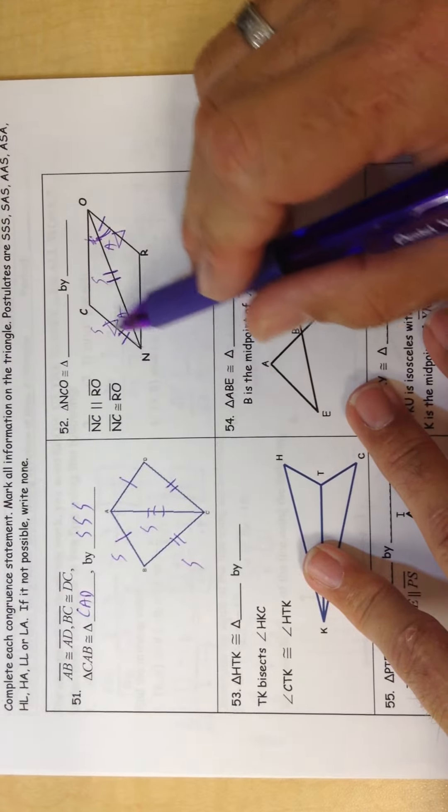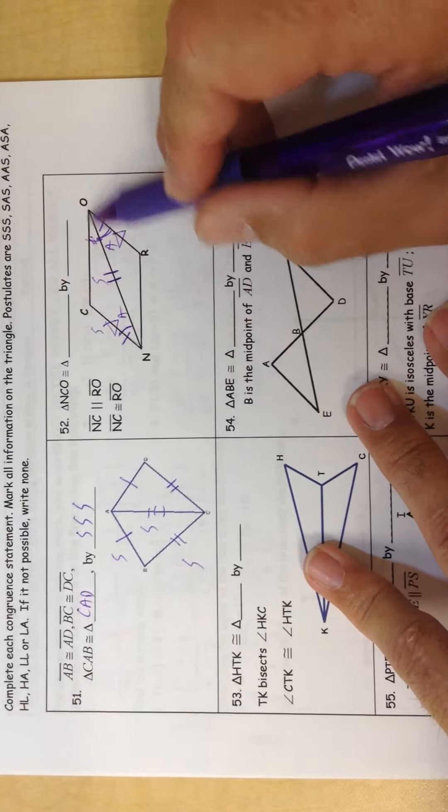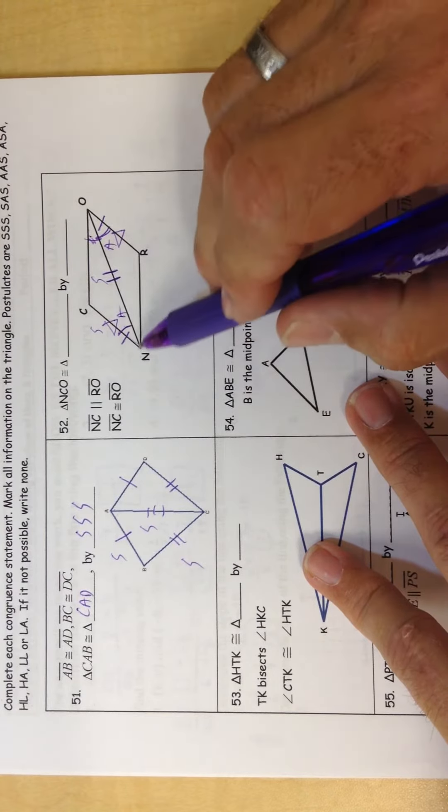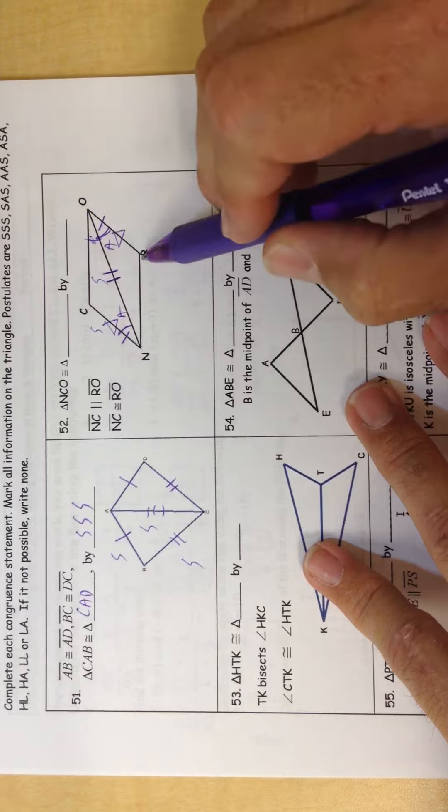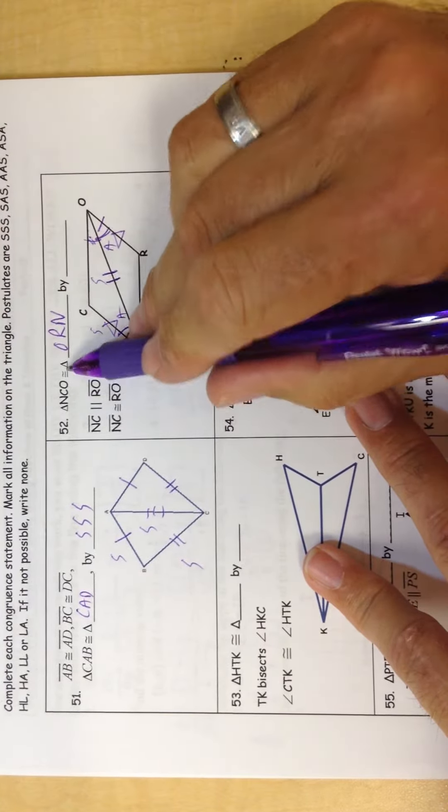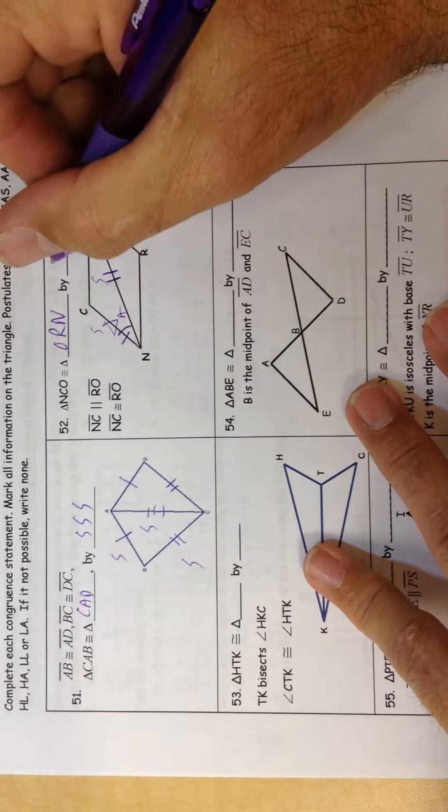So triangle NCO is going to be the same as triangle ORN. Remember, these two letters shall flop. By side, angle, side.